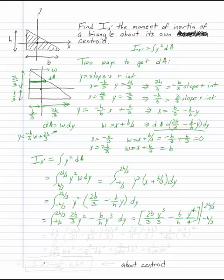Now you just have to be so careful with your arithmetic. This is 2b over 9 times 2h over 3 quantity cubed minus b over 4h times 2h over 3 to the 4th minus 2b over 9 times negative h over 3 cubed plus minus a minus, b over 4h times minus h over 3 to the 4th power.